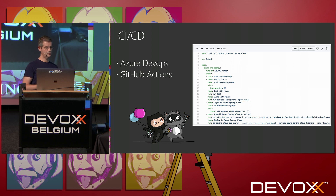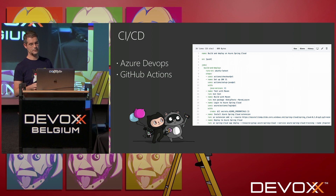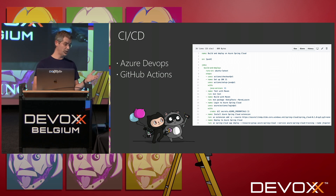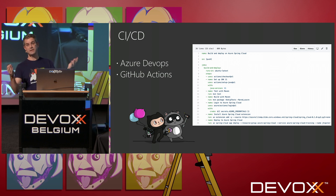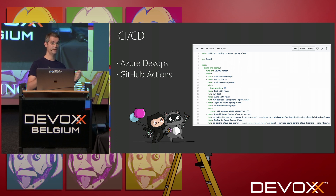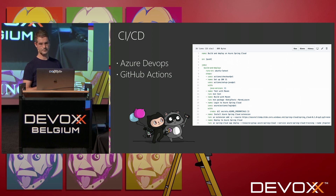I don't even know the JDK being used. On Azure we use the Zulu JDK from Azul Systems — it's a supported JDK, which is quite important nowadays. I just said JDK 11 and it's being maintained for me by Azure. I'm very happy about that because I don't want to know about the latest critical vulnerability in the JDK — I want the cloud to take care of that for me.